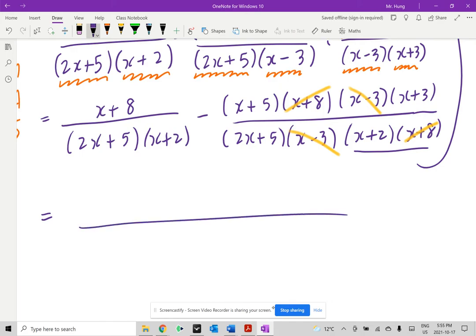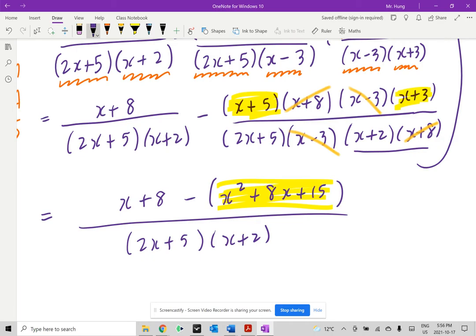I'm looking for a common denominator, which is 2x plus 5 times x plus 2. I'm going to copy this first part, which is x plus 8 minus. Now, notice this bracket, and I'll put this in a different color for you. It's x plus 5 times x plus 3. So I want to expand this inside this bracket. This equals to x squared plus 8x plus 15. You can use the four arrows, expand this, collect like terms.